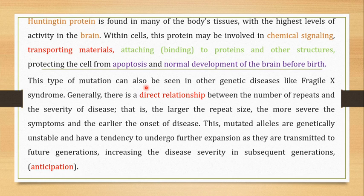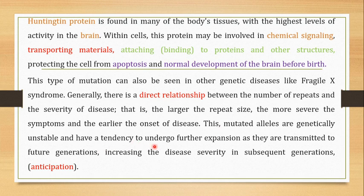This type of mutation — the expansion of repeats — can also be seen in other genetic diseases like fragile X syndrome. There is a direct relationship between the number of repeats and the severity of the disease: the larger the repeat size, the more severe the symptoms and the earlier the onset. Additionally, these mutated alleles tend to be genetically unstable and undergo further expansion as they are transmitted to future generations, increasing disease severity in subsequent generations. This phenomenon is known as anticipation.